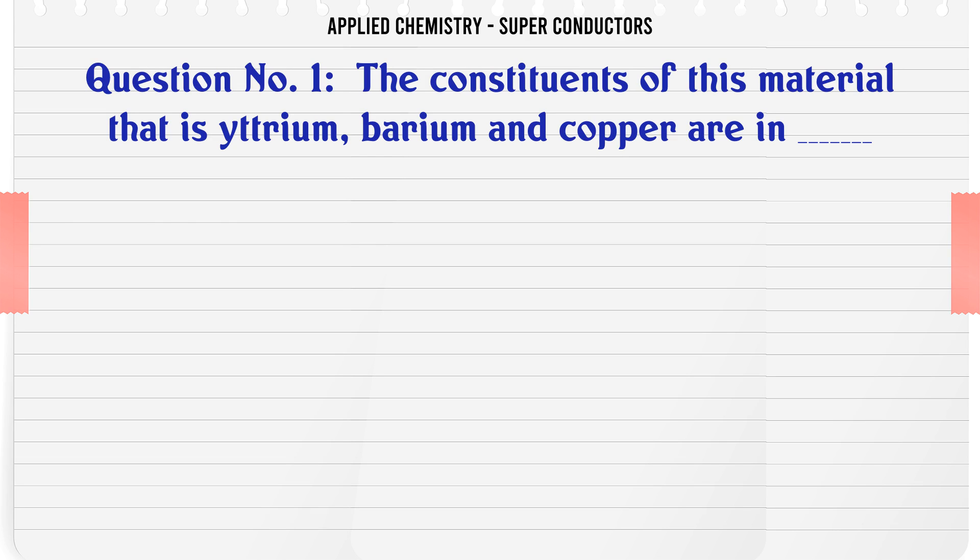The constituents of this material, i.e. yttrium, barium, and copper are in: A 1:1:1, B 1:2:2, C 1:2:3, D 1:2:1. The correct answer is 1:2:3.